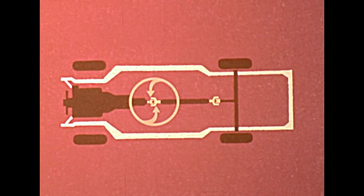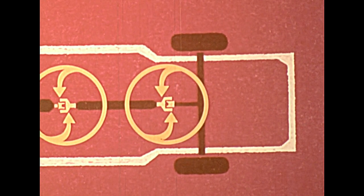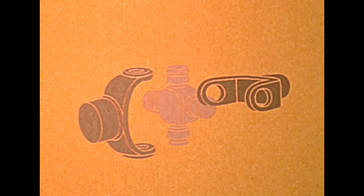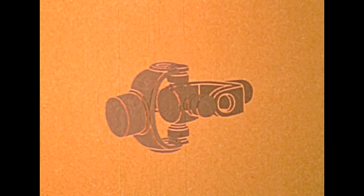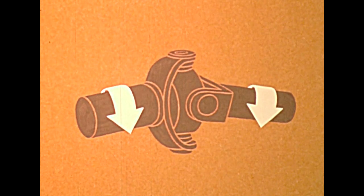The problem is solved by the universal joint. It may be installed at the front or at both ends of the shaft. Each joint is made up of two yokes, connected together by a cross, on which they can pivot. So even though the shafts may be out of alignment, the joint transmits the rotation.